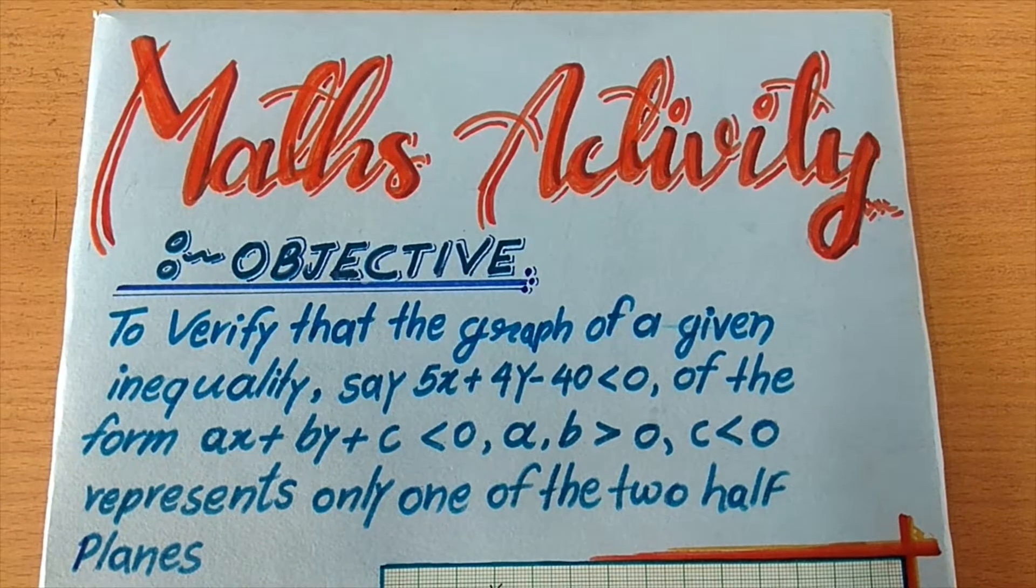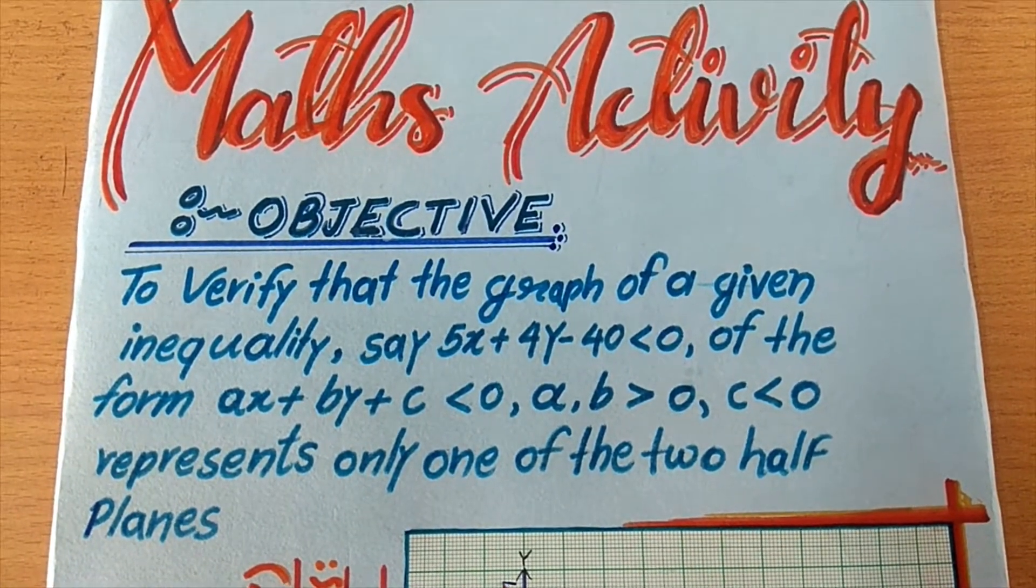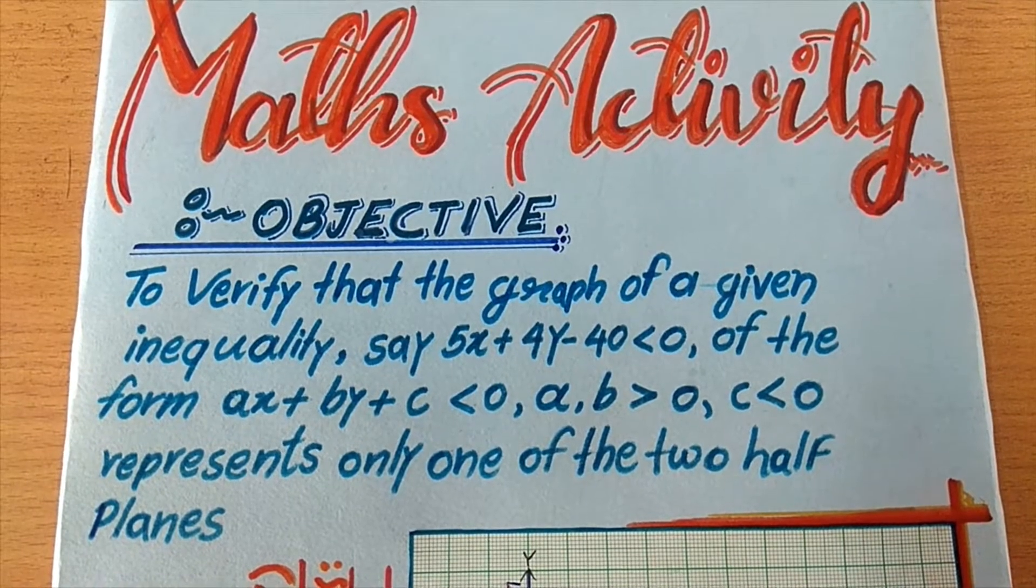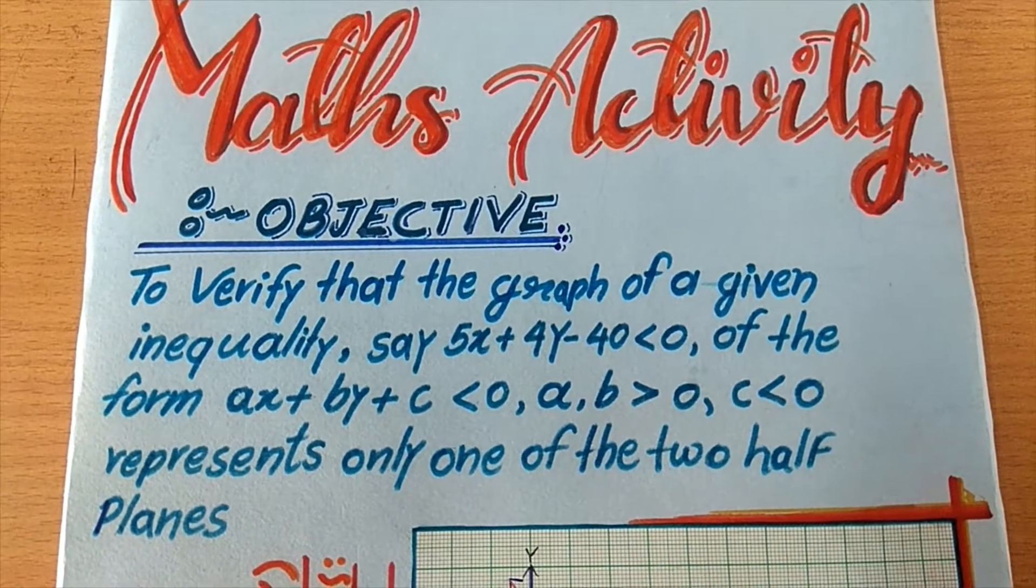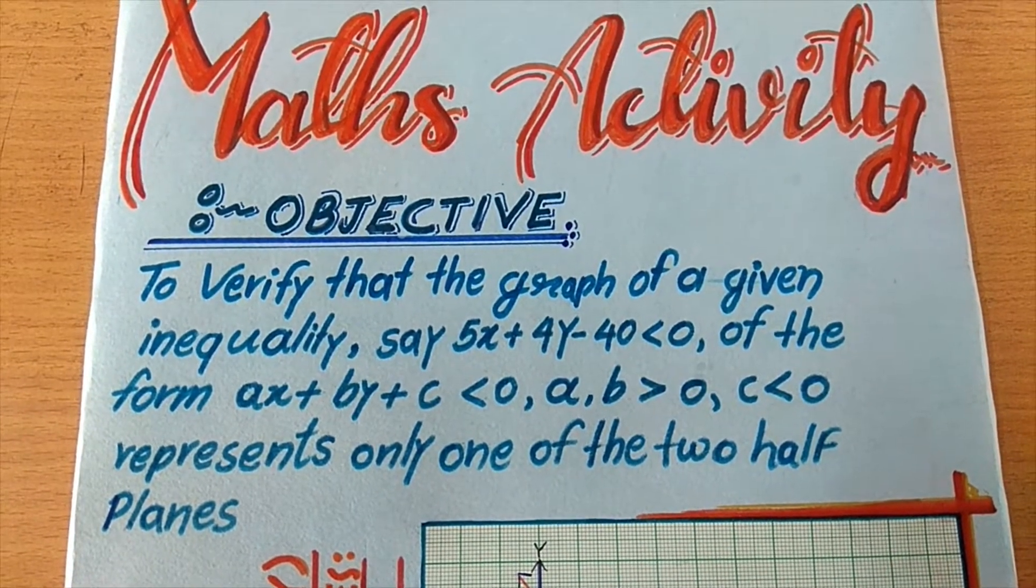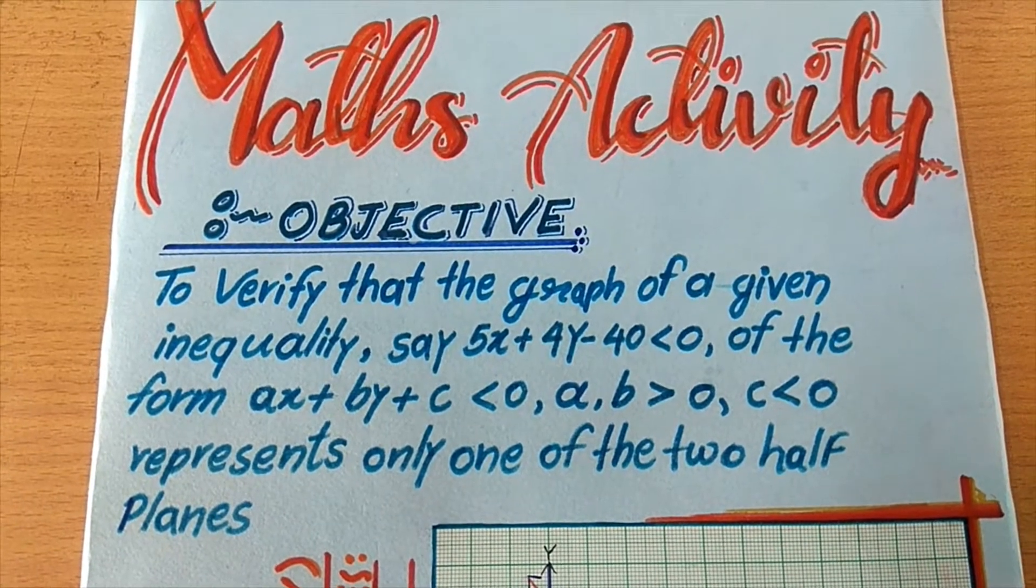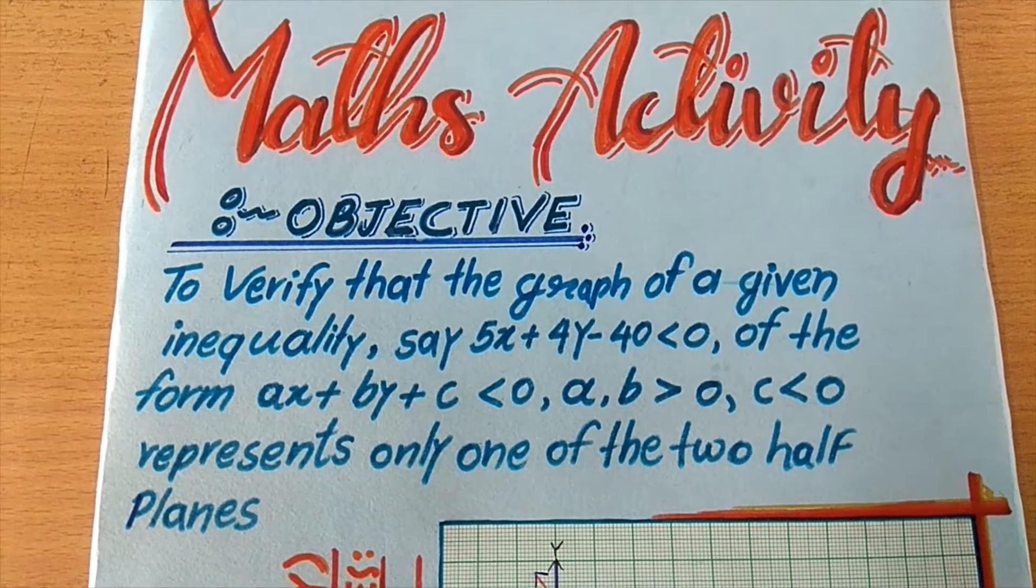Objective of this activity is to verify that the graph of a given inequality, say 5x plus 4y minus 40 less than 0, of the form ax plus by plus c less than 0 where a and b are greater than 0 and c is less than 0, represents only one of the two half planes.